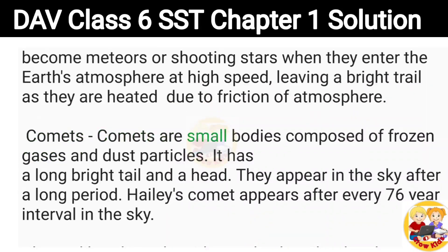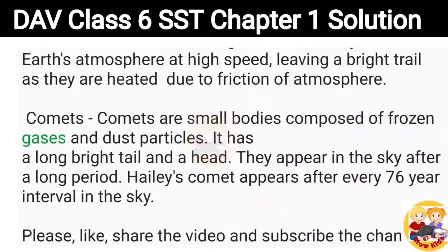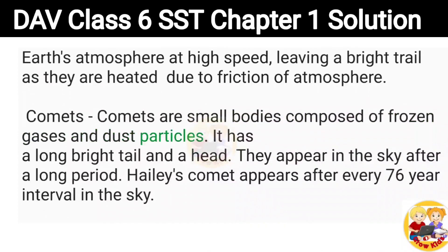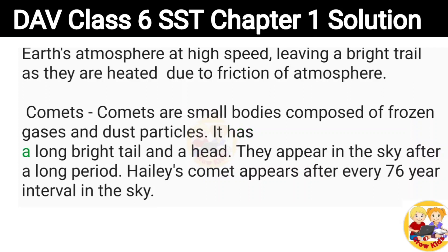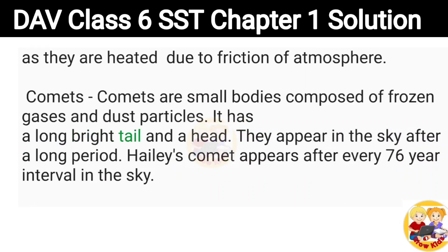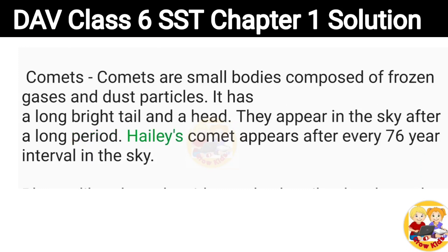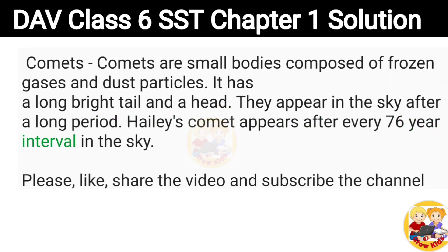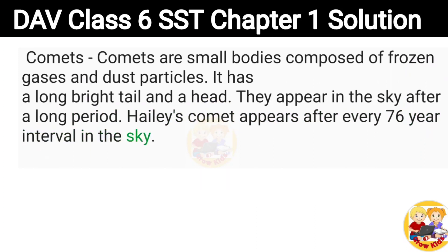Comets: Comets are small bodies composed of frozen gases and dust particles. They have a long bright tail and a head. They appear in the sky after a long period. Halley's Comet appears after every 76-year interval in the sky.